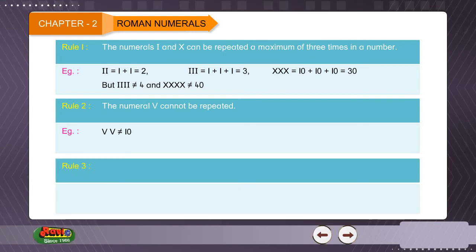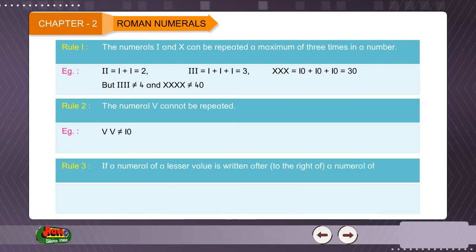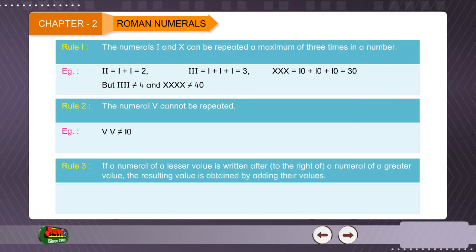Rule 3: If a numeral of a lesser value is written after, to the right of a numeral of a greater value, the resulting value is obtained by adding their values. Example: VI equals 5 plus 1 equals 6, XV equals 10 plus 5 equals 15.